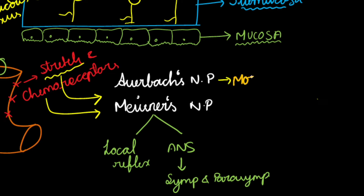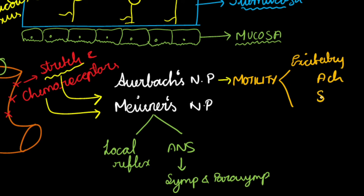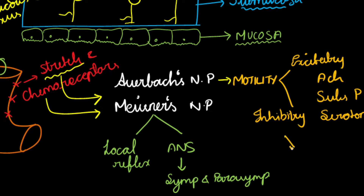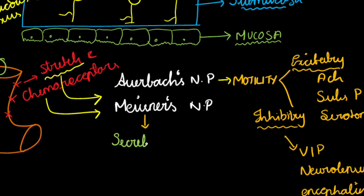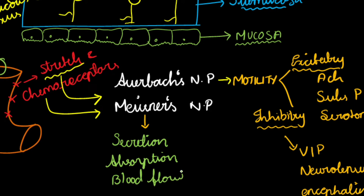Auerbach's plexus is mainly concerned with the motility of the GIT, and this motility is governed by two types of neurotransmitters. The excitatory neurotransmitters are acetylcholine, substance P, and serotonin. The inhibitory neurotransmitters are VIP, neurotensin, and enkephalin. Meissner's nerve plexus is mainly concerned with the secretion of glands, absorption, and it controls blood flow of the intestinal wall.